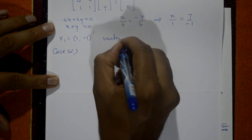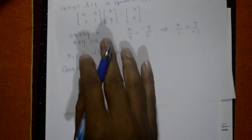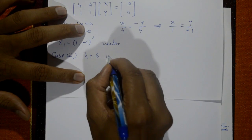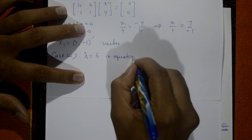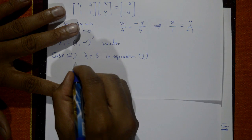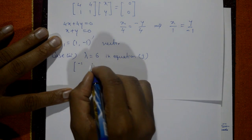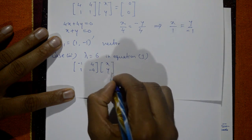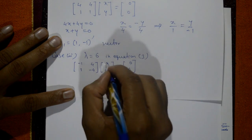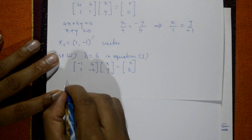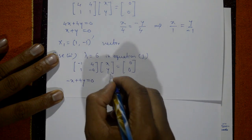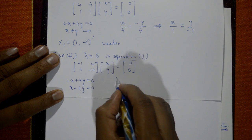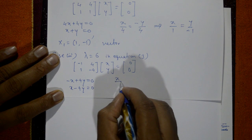Case 2: λ = 6. Put λ = 6 in equation number 1. The matrix becomes [[−1, 4], [1, −4]] times [x, y] = [0, 0]. Writing in equation form: −x + 4y = 0 (first row) and x − 4y = 0 (second row).